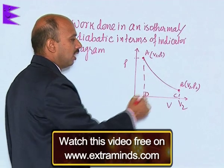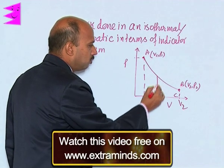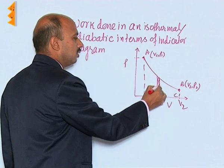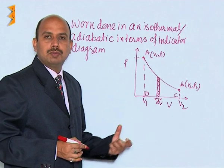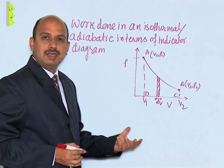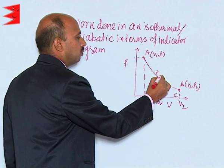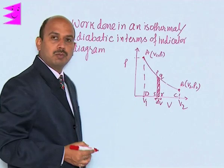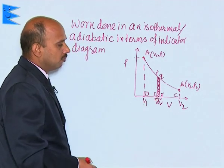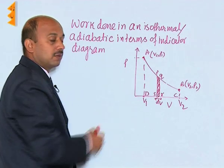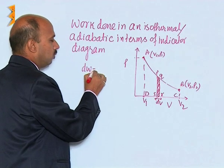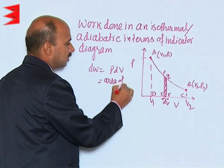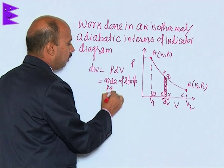We divide this graph — this curve — into small parts. Suppose we take a very small part where the change in volume is dV. For this small change in volume, we assume pressure to be constant. The points of this shaded strip are P, Q, R, and S. So for a small change in volume dV at constant pressure, the work done is dW = P·dV, which equals the area of the strip PQRS.